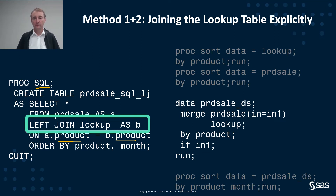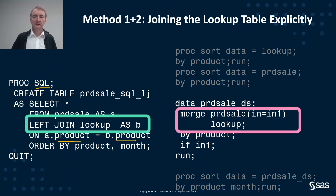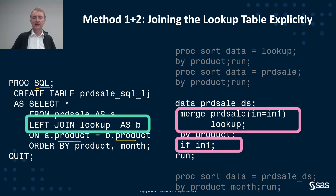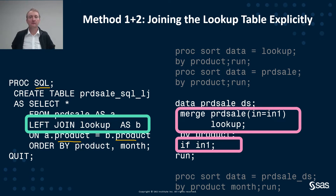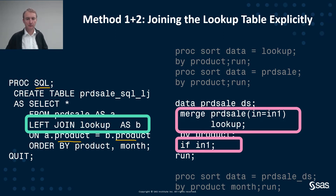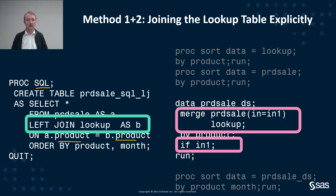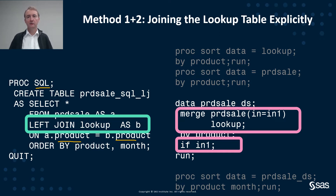Another way you could do this is a SAS data step where you use the merge statement — merging the large products table with the lookup table. It's very important here to use a logical IN variable, which allows you to retain only those records which were available in your original customer table, and not get other records which may exist in the lookup table but do not get a match. This gives you a left join with a SAS data step. It's important to note that if you run this in SAS 9 you need to pre-sort your data, whereas in CAS with SAS Viya you do not.